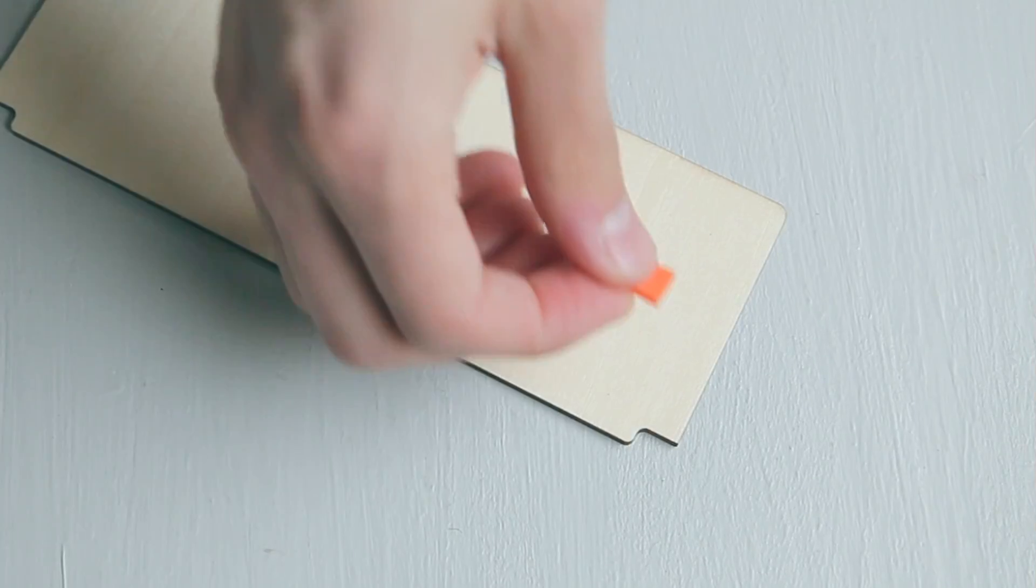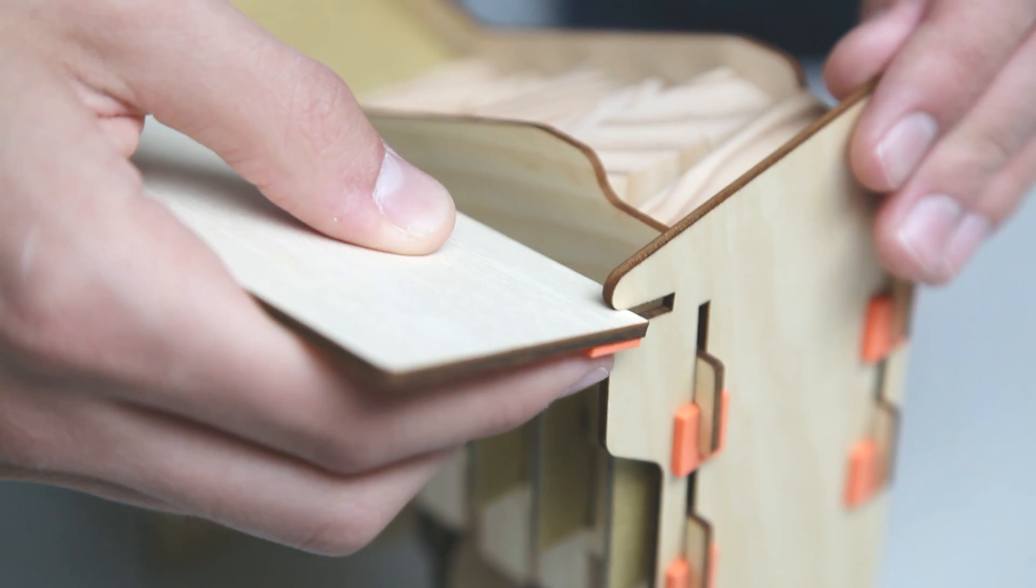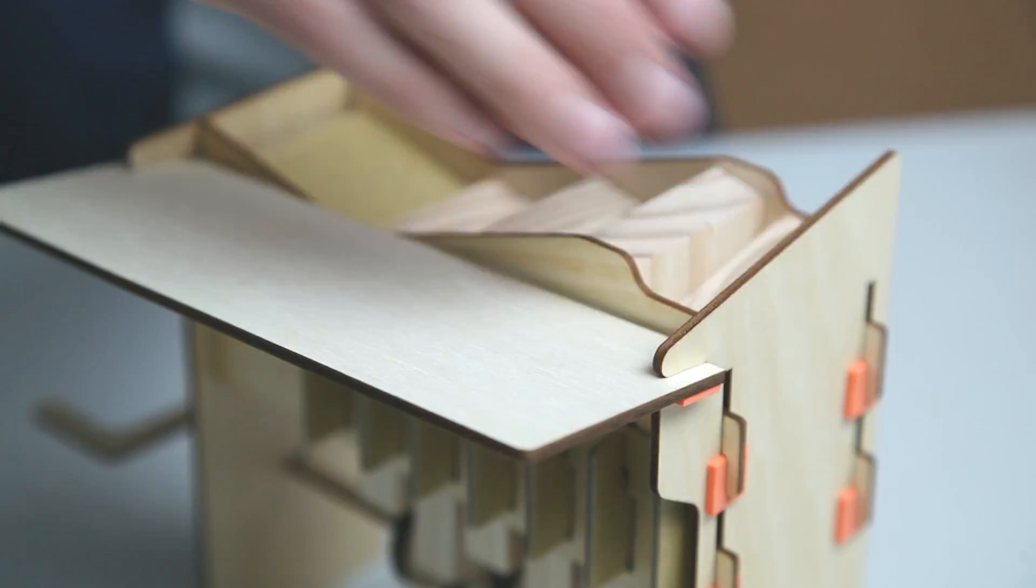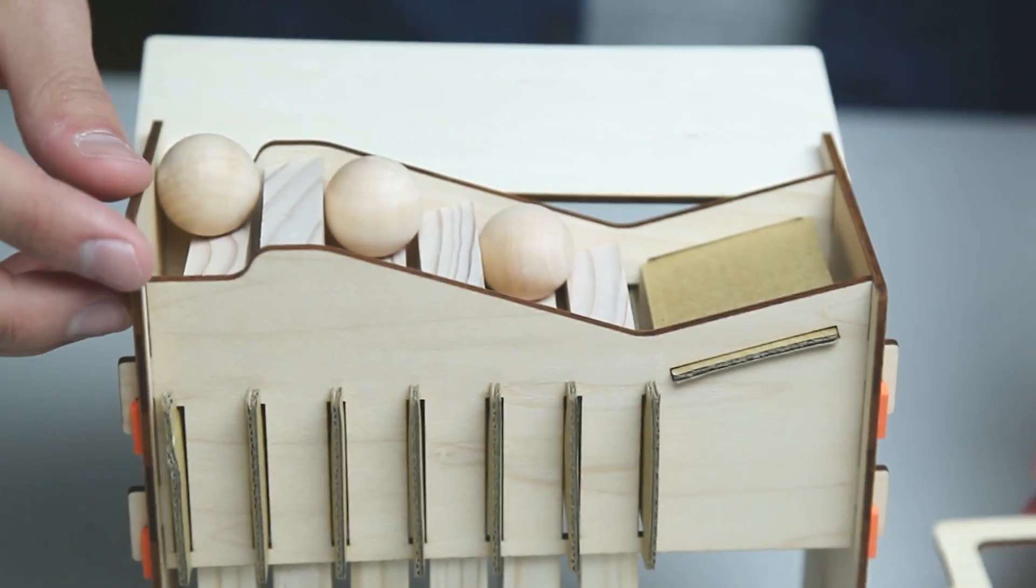Lastly, grab your chute. Stick a sticky foam square into both of the square corners. Flip the chute so that the foam faces down and slide the chute onto the frame. Now drop your marbles onto the steps and watch them climb.